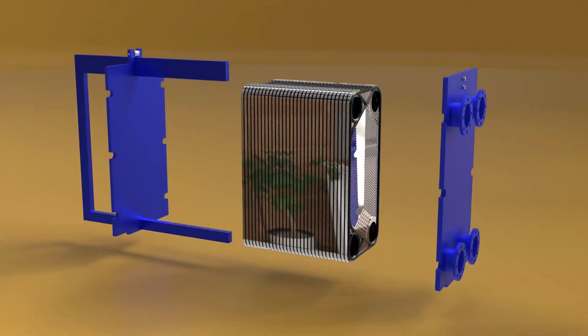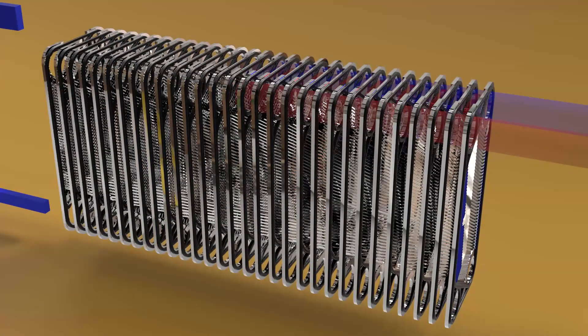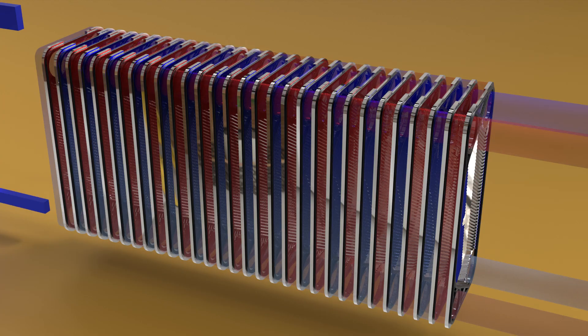If you look closely at the 3D model, you can see how gasket layout blocks certain ports and allows the flow in specific ports.